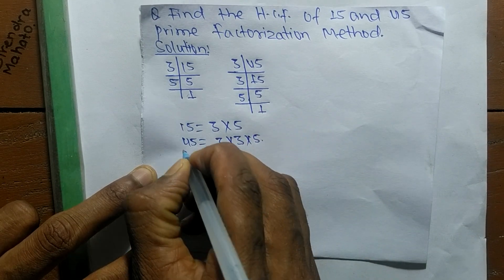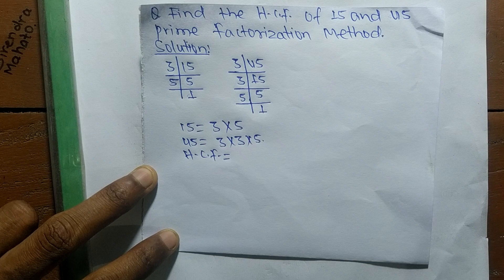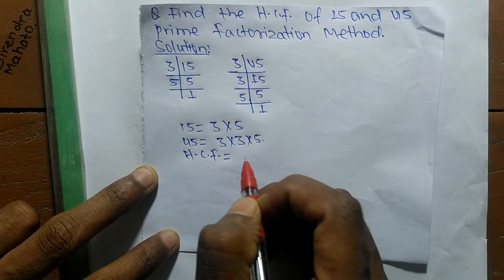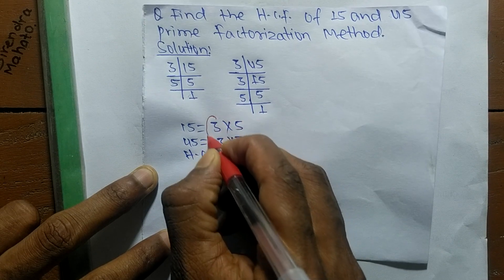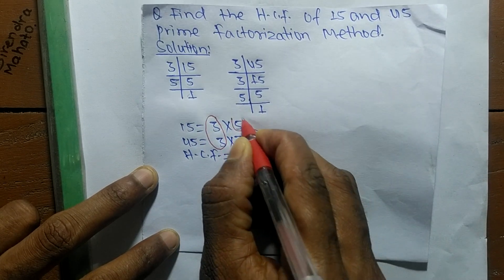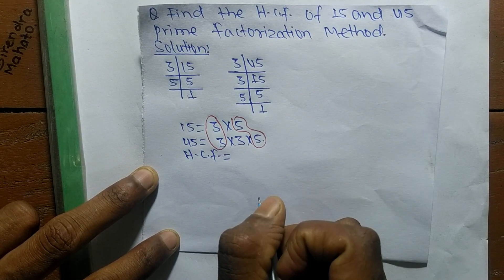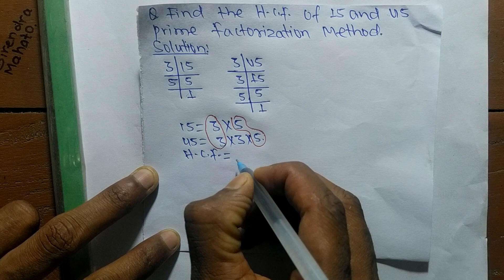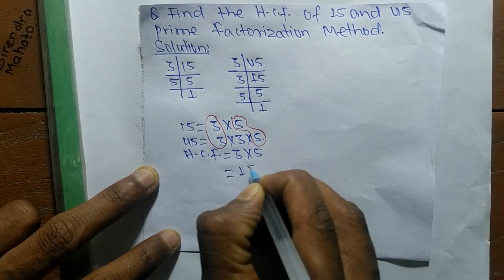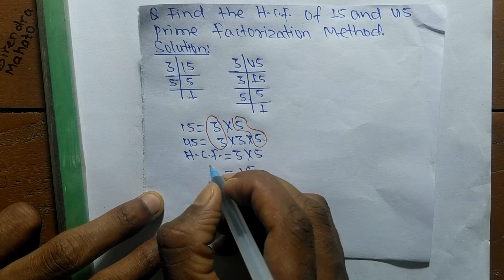Now we have to find out the common factors in these prime factors. The first common factor is 3, and the second one is 5. The HCF is the product of all the common factors, so it is 3 times 5, which equals 15. So 15 is the highest common factor of 15 and 45.